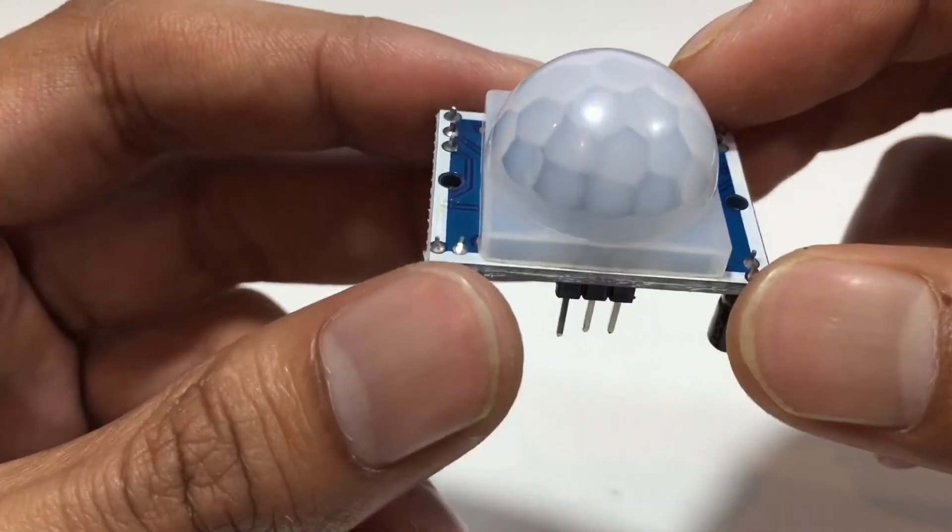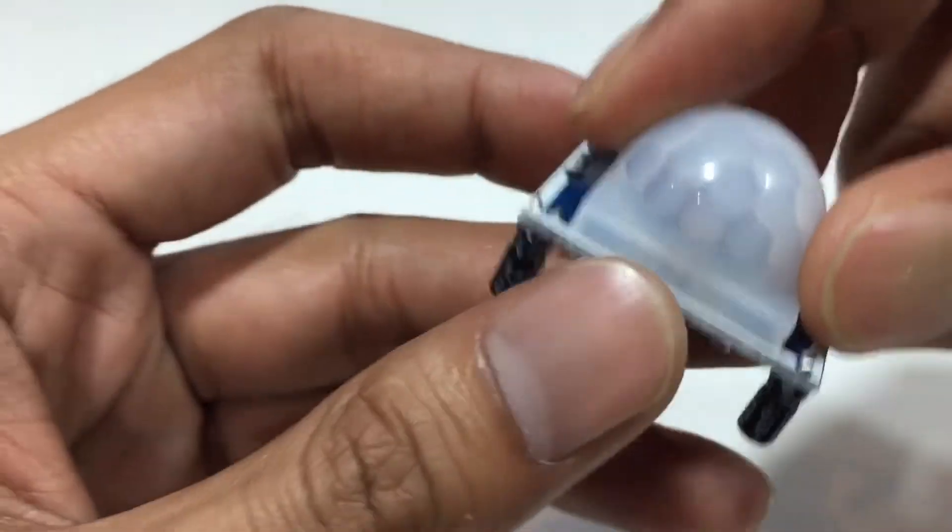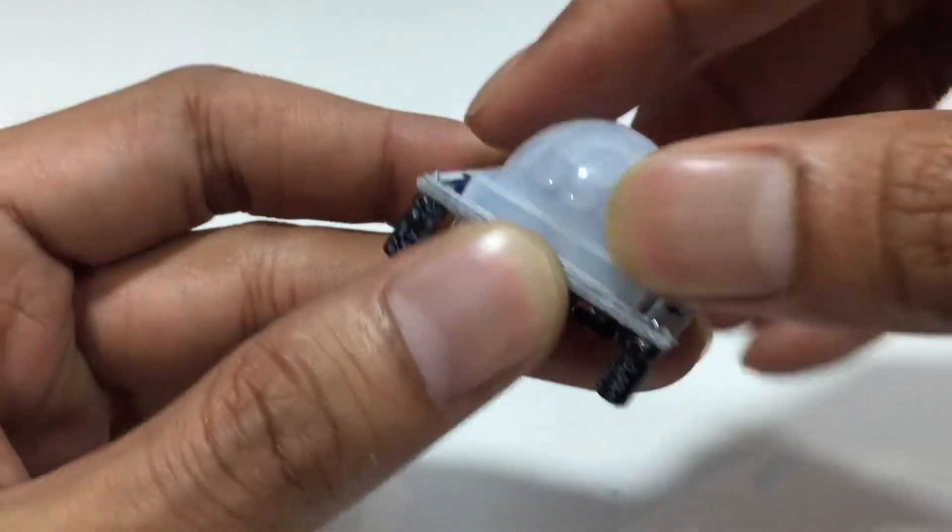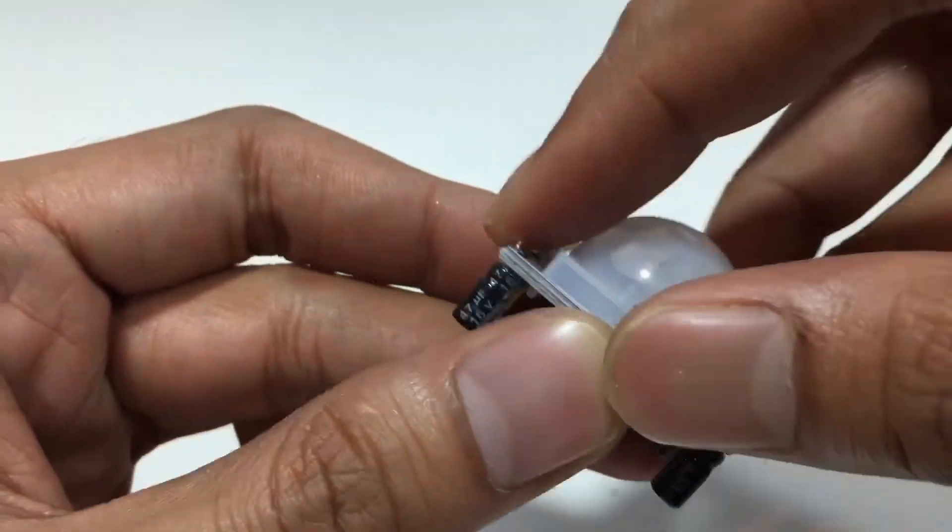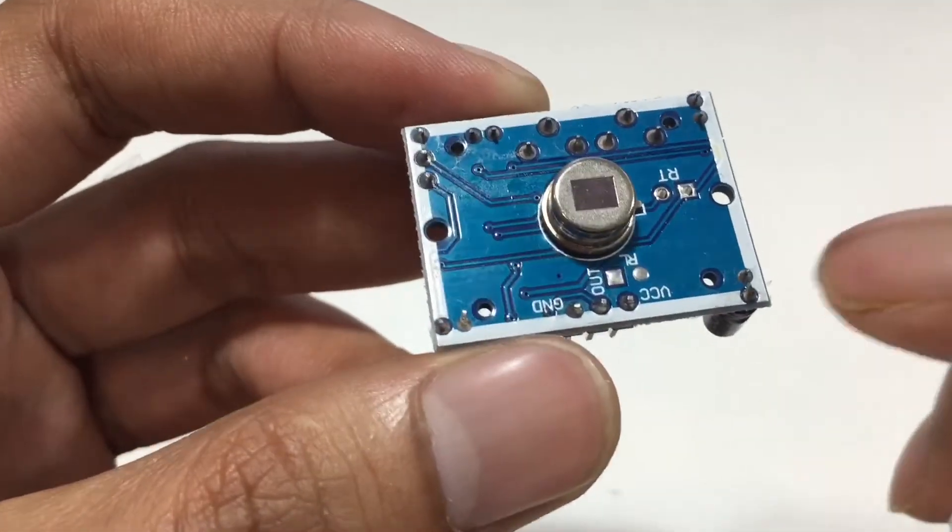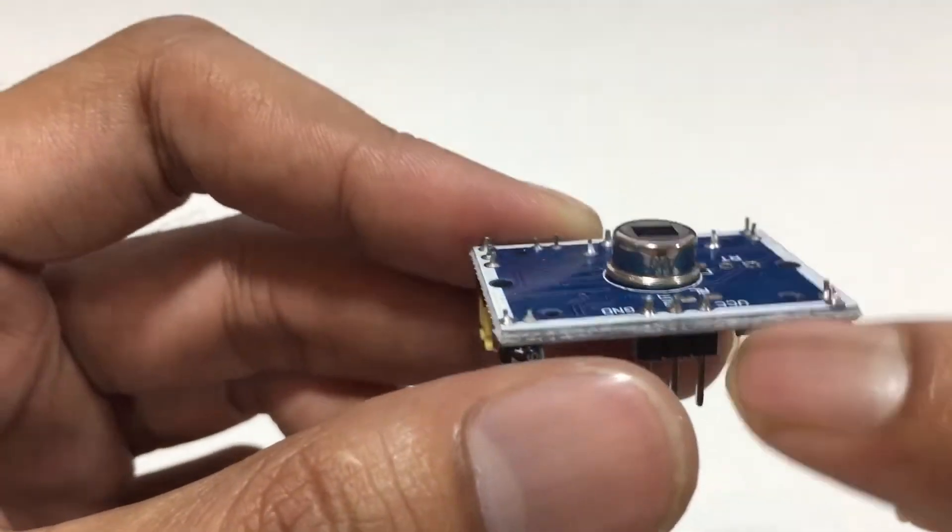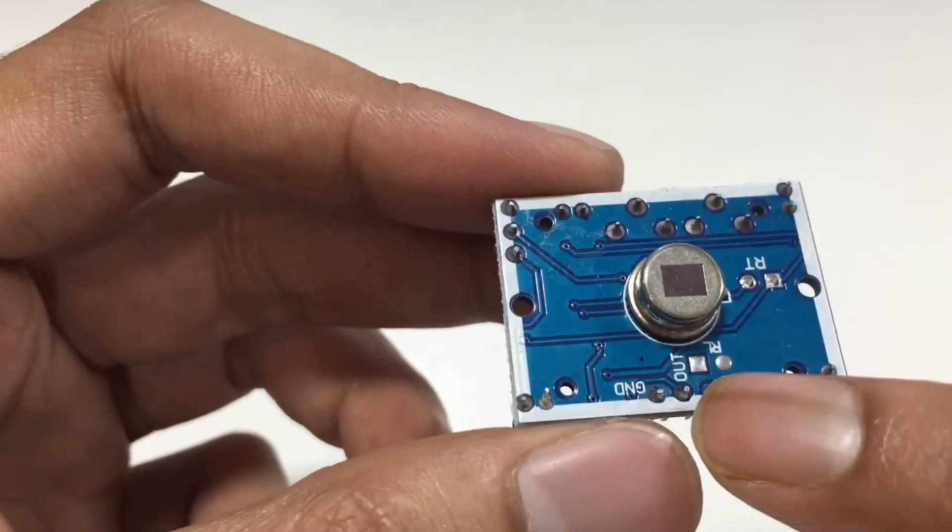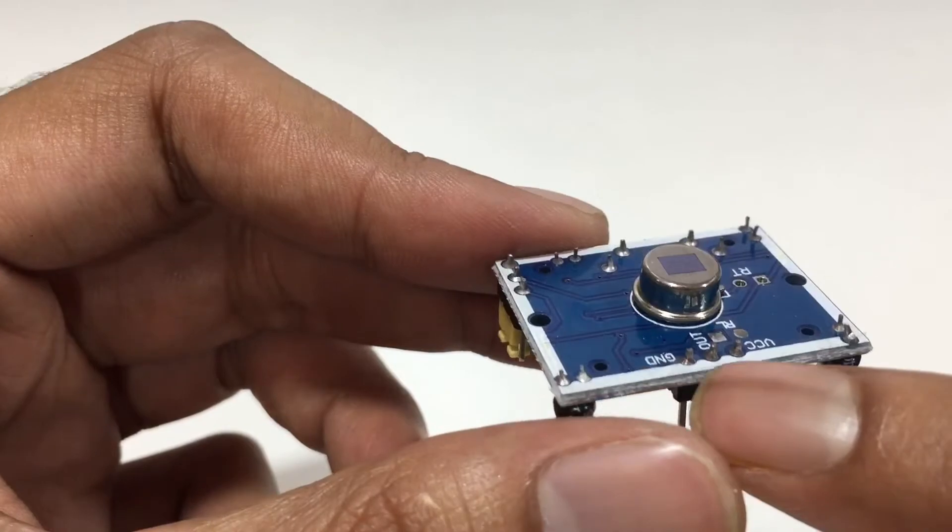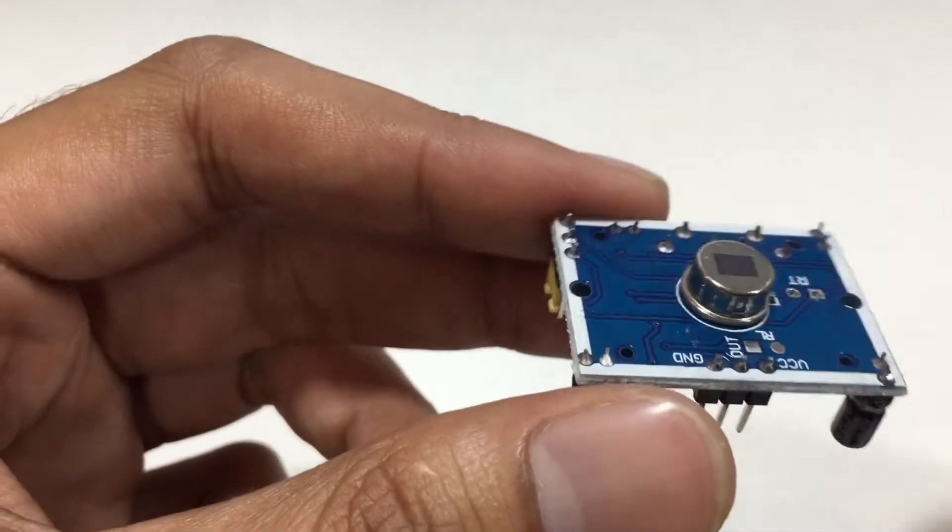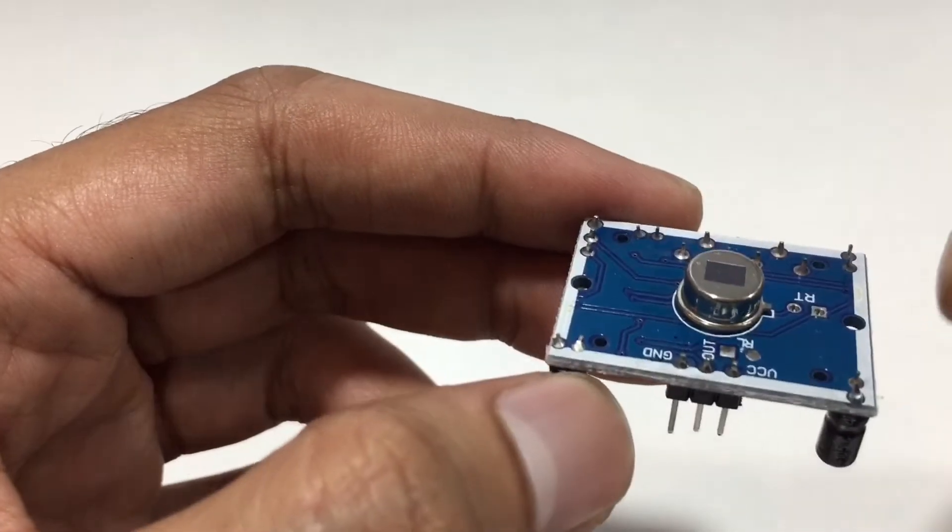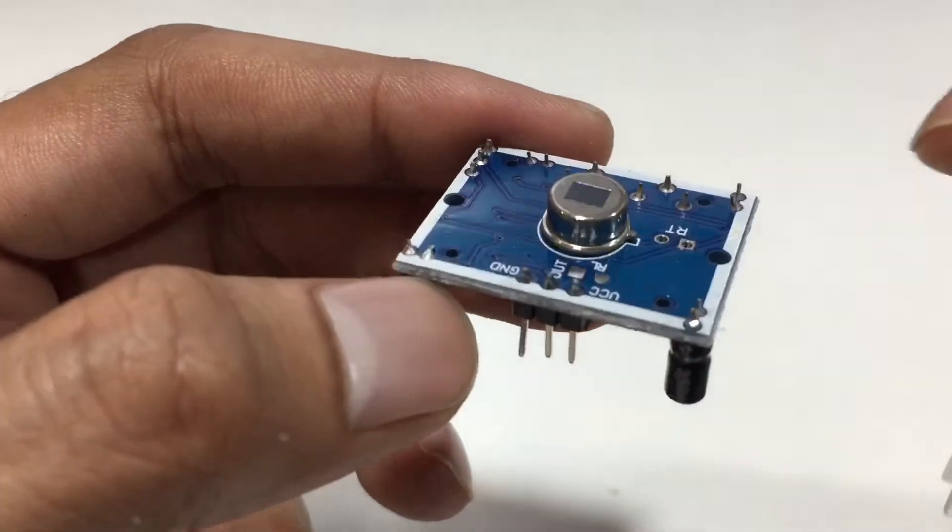To find out the pin name, you can remove this. Here you can see the pin. This one is VCC. The middle one is out, output. And this one ground. So don't make confuse. If you have any confusion, remove the cap and then make sure the pin.